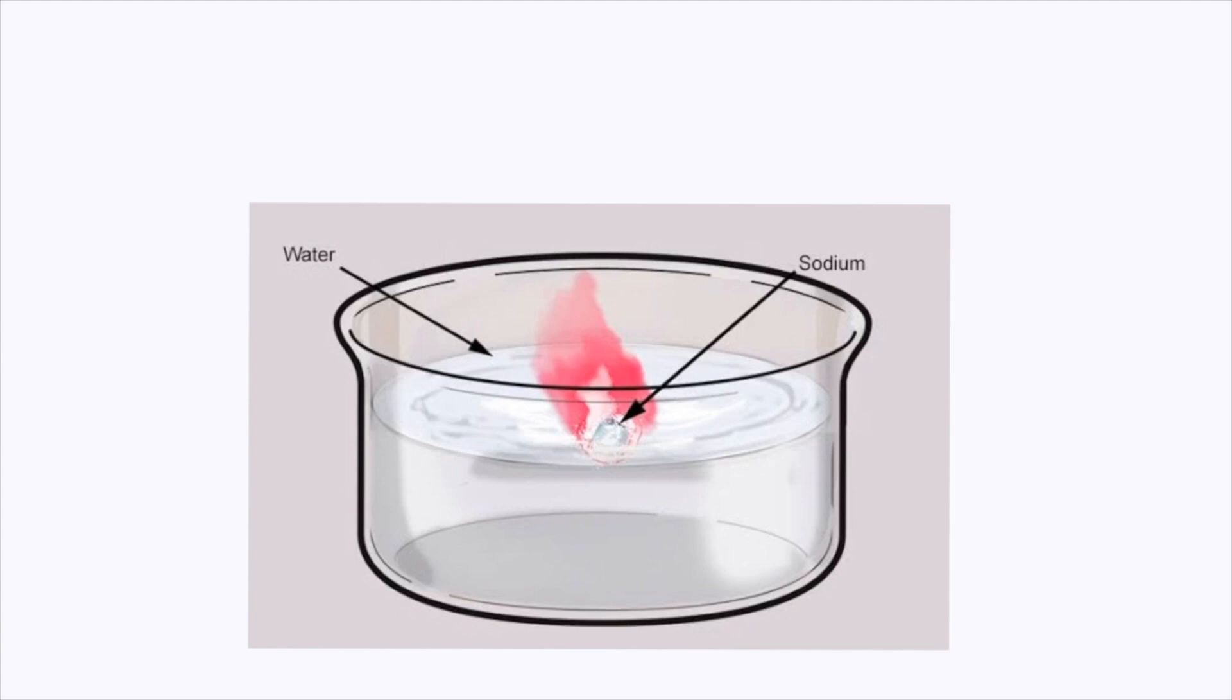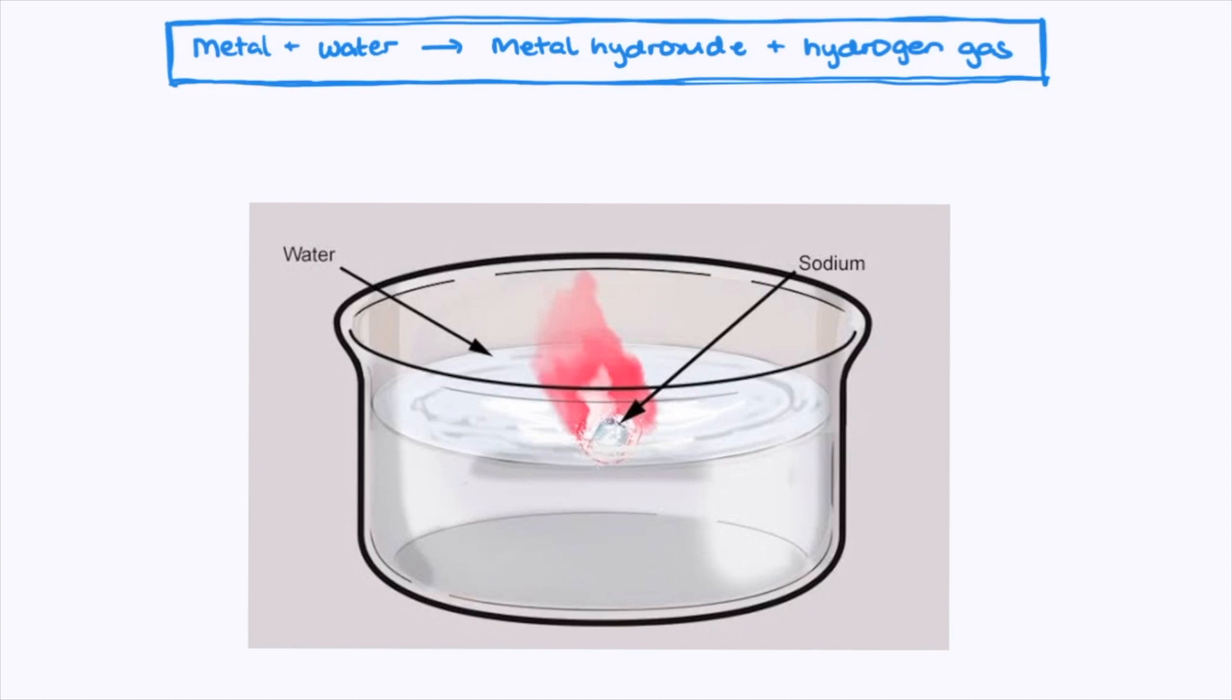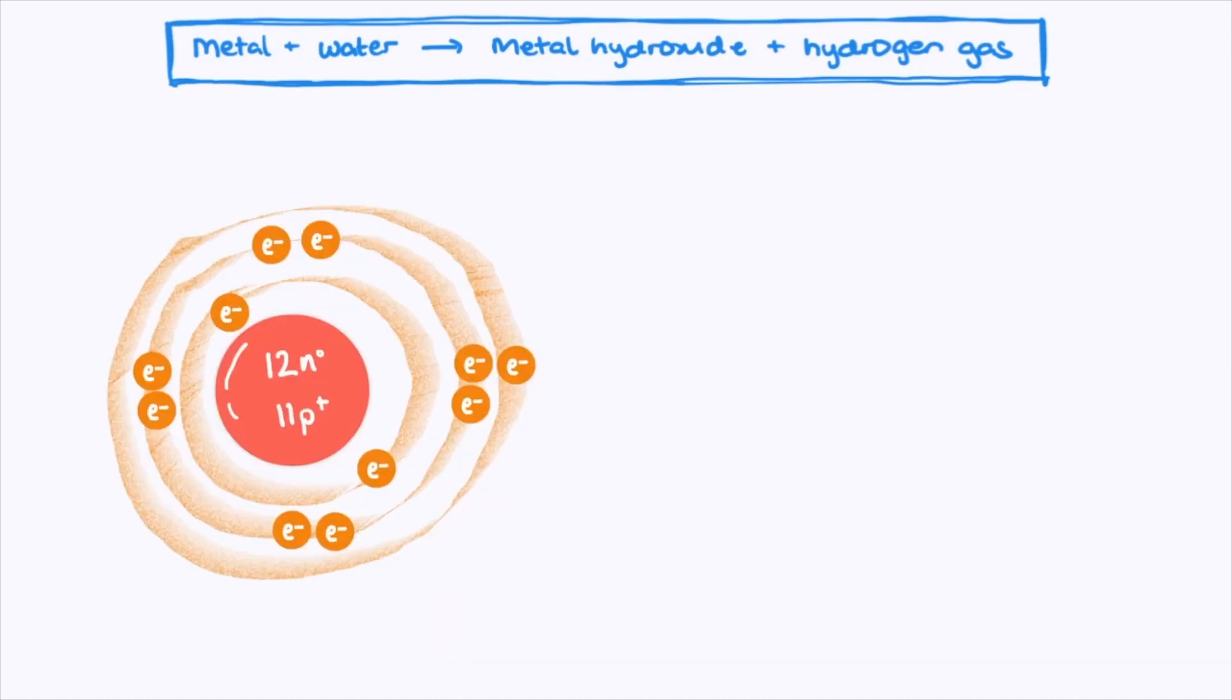As a general rule, metals react with water to form the metal hydroxide and hydrogen gas. When the metal elements interact with water, they form cations as they lose valence electrons. The weaker the attraction between the valence electrons and the nucleus determines how readily the metals react.